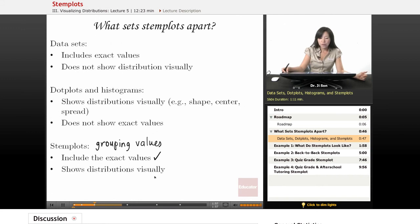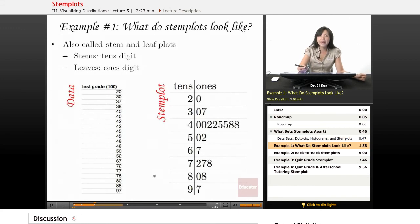So what do stem plots actually look like? Here's our first example. They're also called stem and leaf plots. The stems are really the tens digit, and the leaves are actually the ones digit of your data.